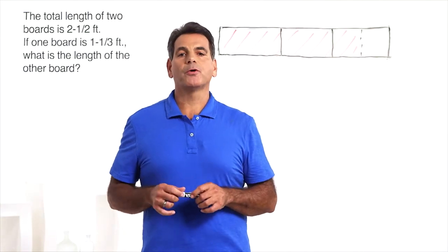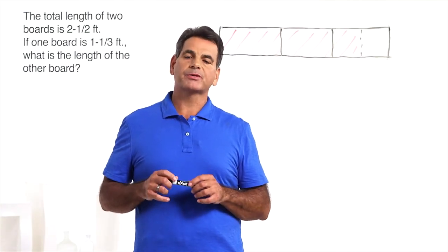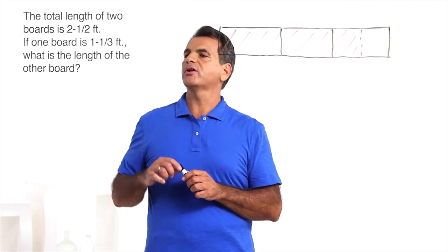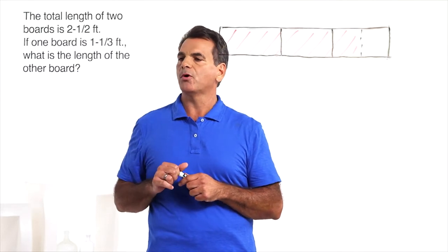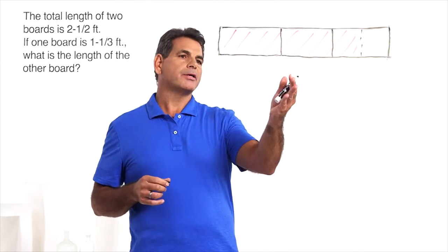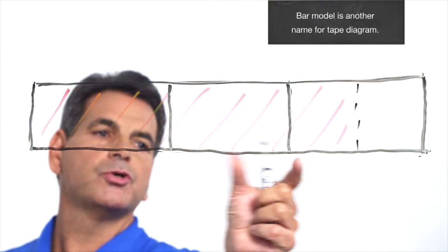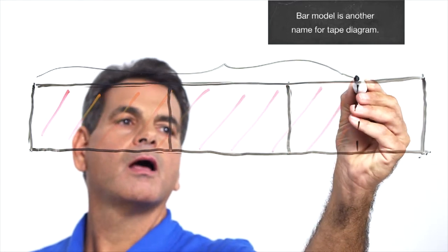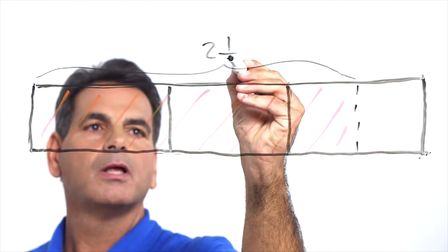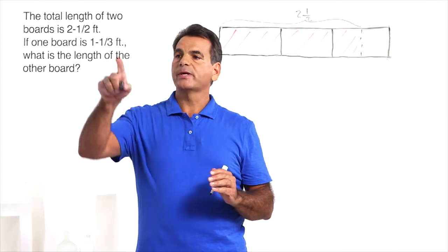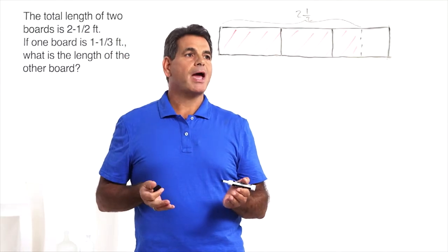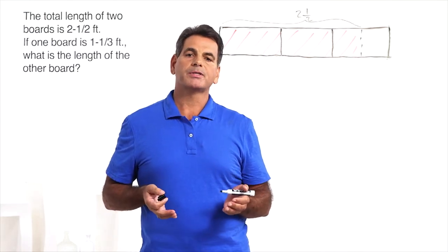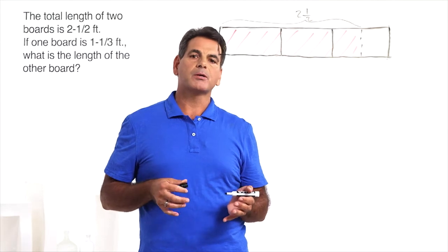Now let's put this all together in a word problem involving subtraction of mixed numbers. The total length of two boards is 2 and 1 half feet. If one board is 1 and 1 third feet, what is the length of the other board? I'm using a bar model here and I've indicated 2 and 1 half: 1, 2 and 1 half. The other fraction we have is 1 third. So the problem we have is we have uncommon denominators, and we can't do any addition or subtraction with uncommon denominators. So let's think about how we can make common denominators.